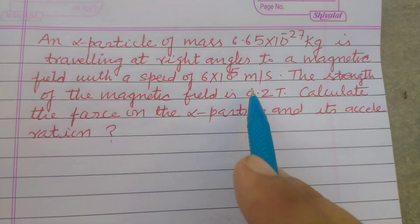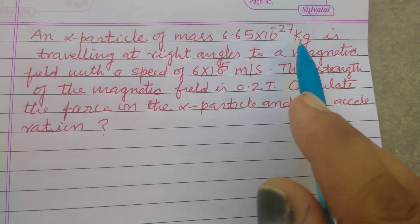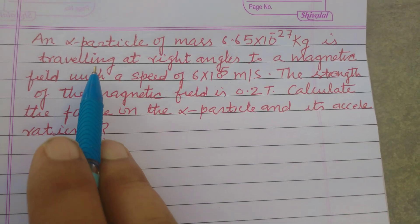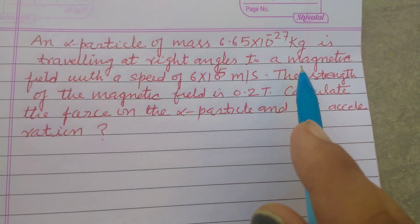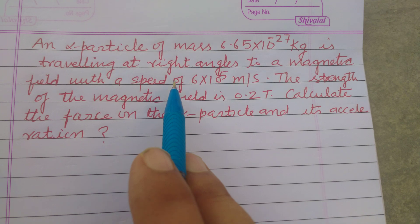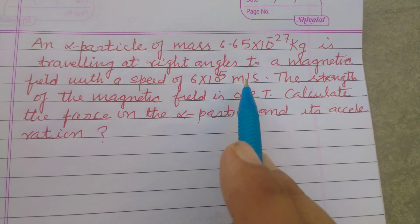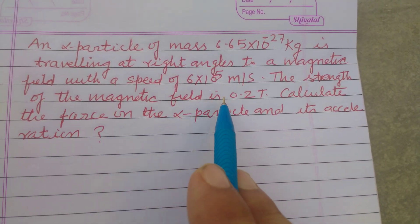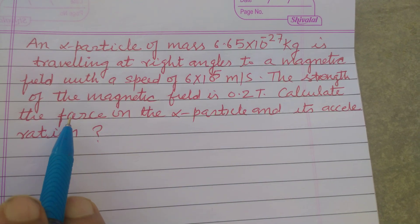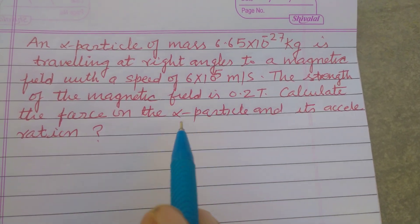An alpha particle of mass is traveling at right angles to a magnetic field with a speed of 6 × 10^5 meters per second. The strength of the magnetic field is 0.2 Tesla. Calculate the force on the alpha particle and its acceleration.